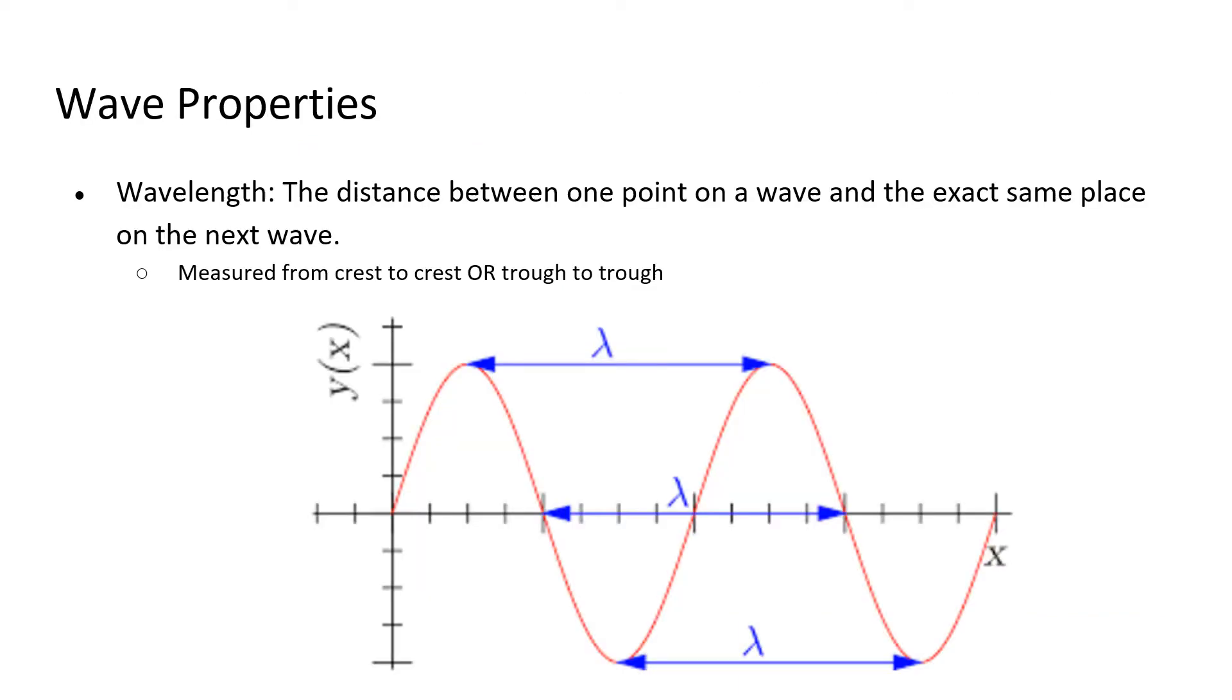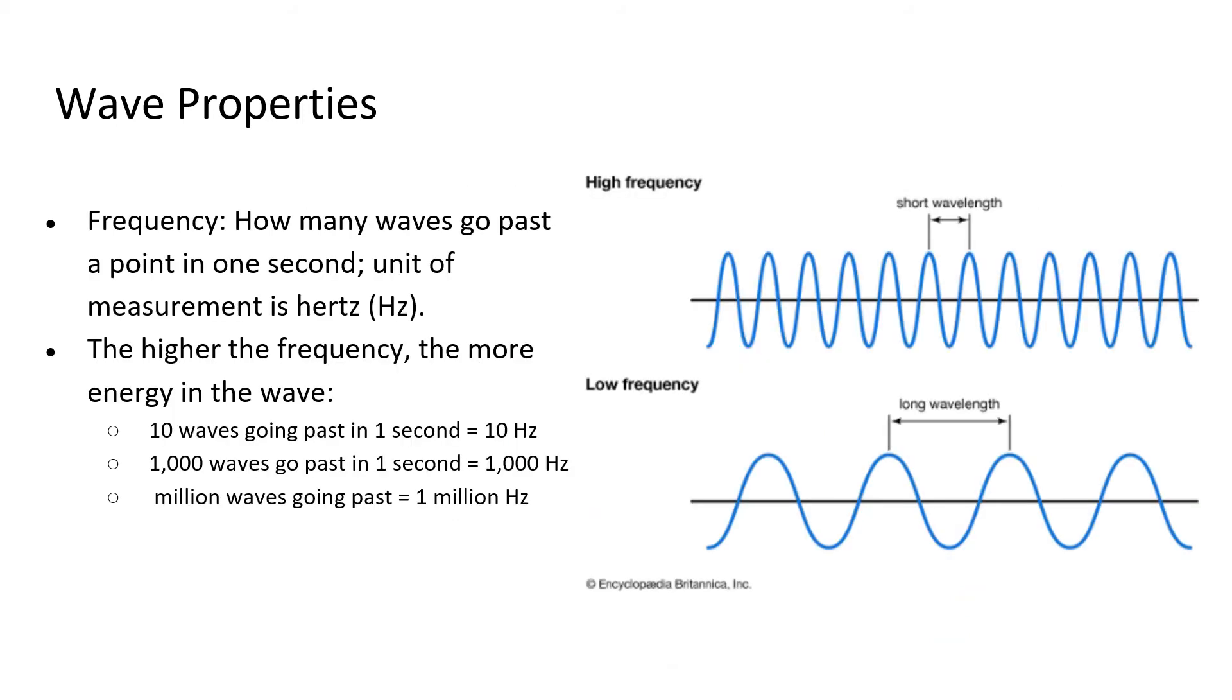Wave properties: the wavelength is the distance between one point of a wave to the exact same place on the next wave. It's measured from crest to crest or trough to trough, or also in the middle as well. Frequency is how many waves go past a point in one second.